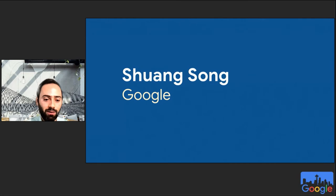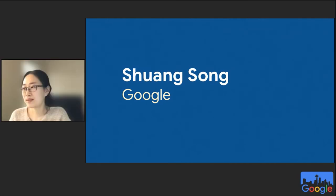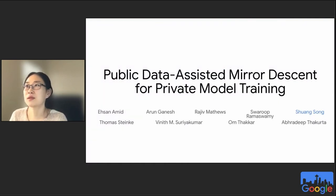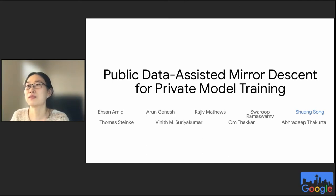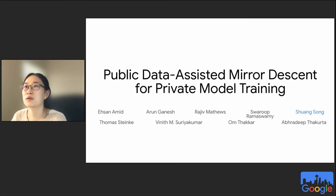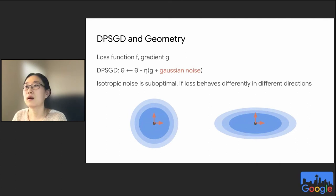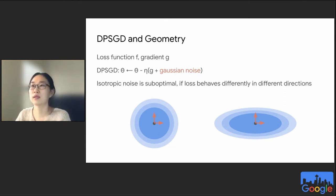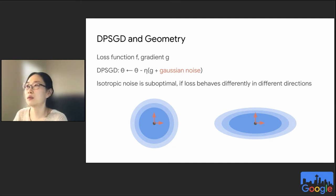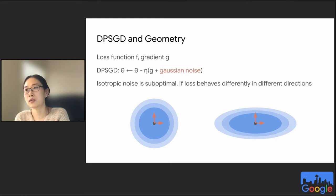Next, we have Chuang Song from Google. I'm going to talk about our project on public data-assisted mirror descent for private model training. This is joint work with many people: Aron is from UC Berkeley, Monique is from MIT — they interned at Google while we worked on this project — and the rest are Googlers across different teams. First, we consider DP-SGD and the geometry of optimization. Given a loss function f over some private data and its gradient g, differentially private SGD updates the model by applying g plus some Gaussian noise multiplied by the learning rate eta.